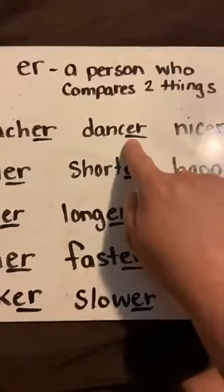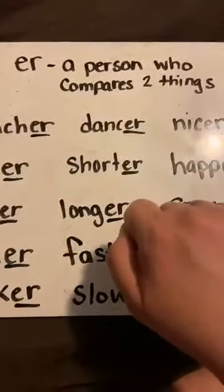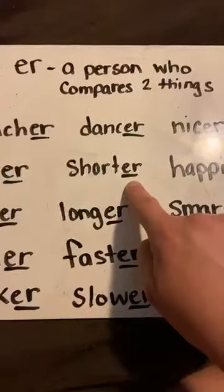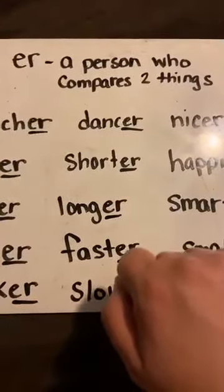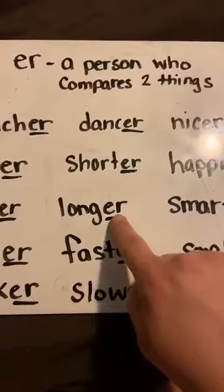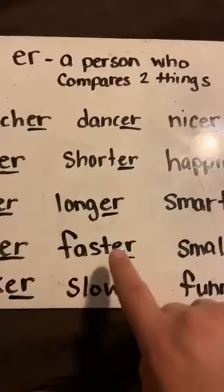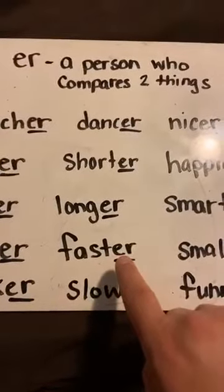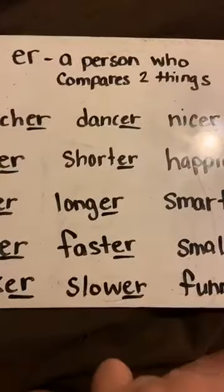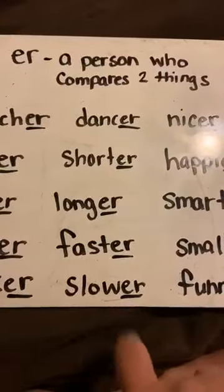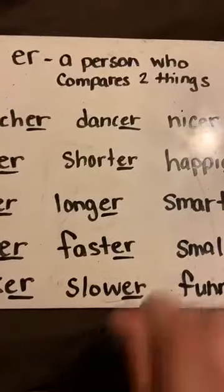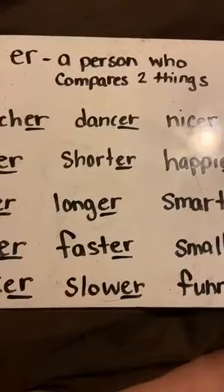Dancer, longer, faster, slower. Now these two it could go both ways — a person who is fast, or comparing: the kangaroo is faster than the turtle.